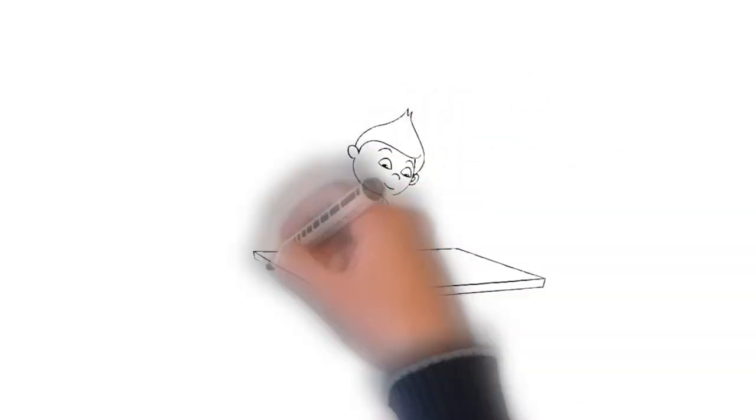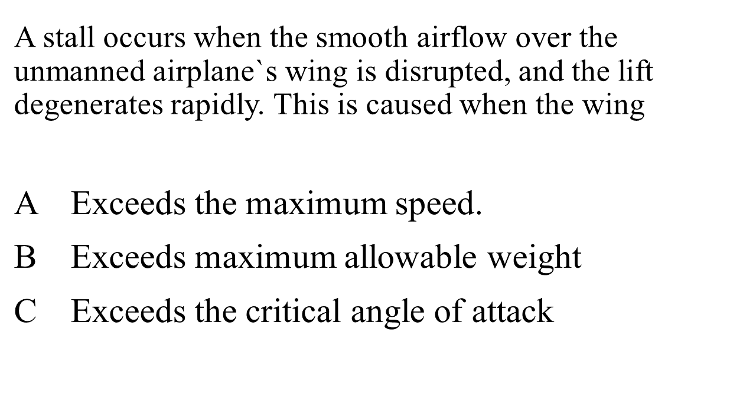Let's take a look at a common FAA exam question. A stall occurs when the smooth airflow over the unmanned airplane's wing is disrupted and the lift degenerates rapidly. This is caused when the wing A exceeds the maximum speed, B exceeds the maximum allowable weight, or C exceeds the critical angle of attack. C exceeds the critical angle of attack.